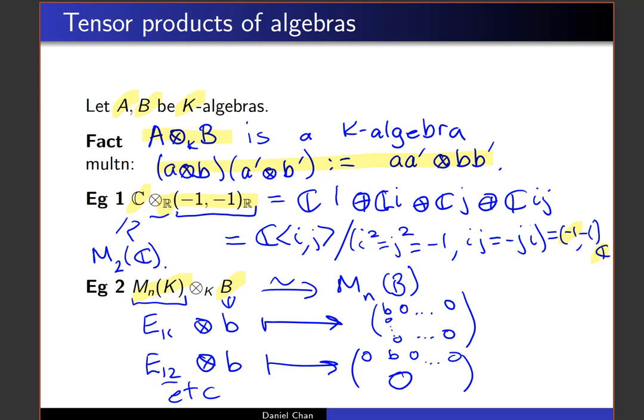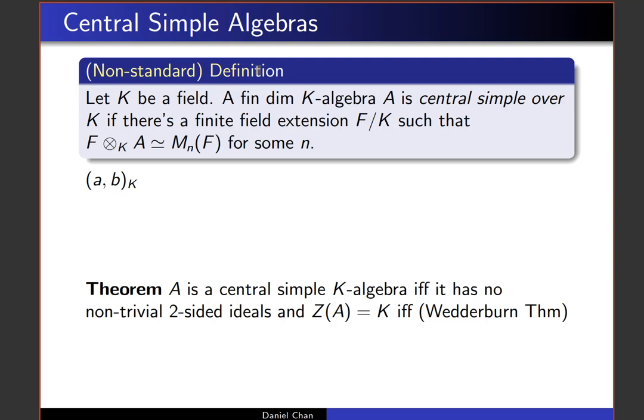So there are two examples of tensor products of algebras — a very important construction in algebra. Now let's move on and come to the definition of a central simple algebra. The one I'm going to give here is a non-standard definition; I'll give you the standard definition as a theorem instead. Normally this definition would be a result, but to simplify the treatment and to connect up with the theme of using these for number theory, I'm going to pick this non-standard definition.